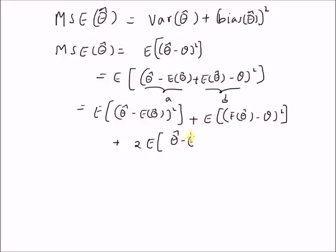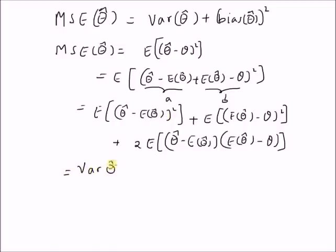The 2ab term is two times expectation of the product of: theta hat minus expectation of theta hat, that is the difference between the estimator and its expectation, and the difference between expected value and theta, that is the bias. By definition, the first term is the variance of the estimator, equal to variance of theta hat. The second term: the expression inside the square is the definition of bias, so the second term is bias of theta hat, whole square.